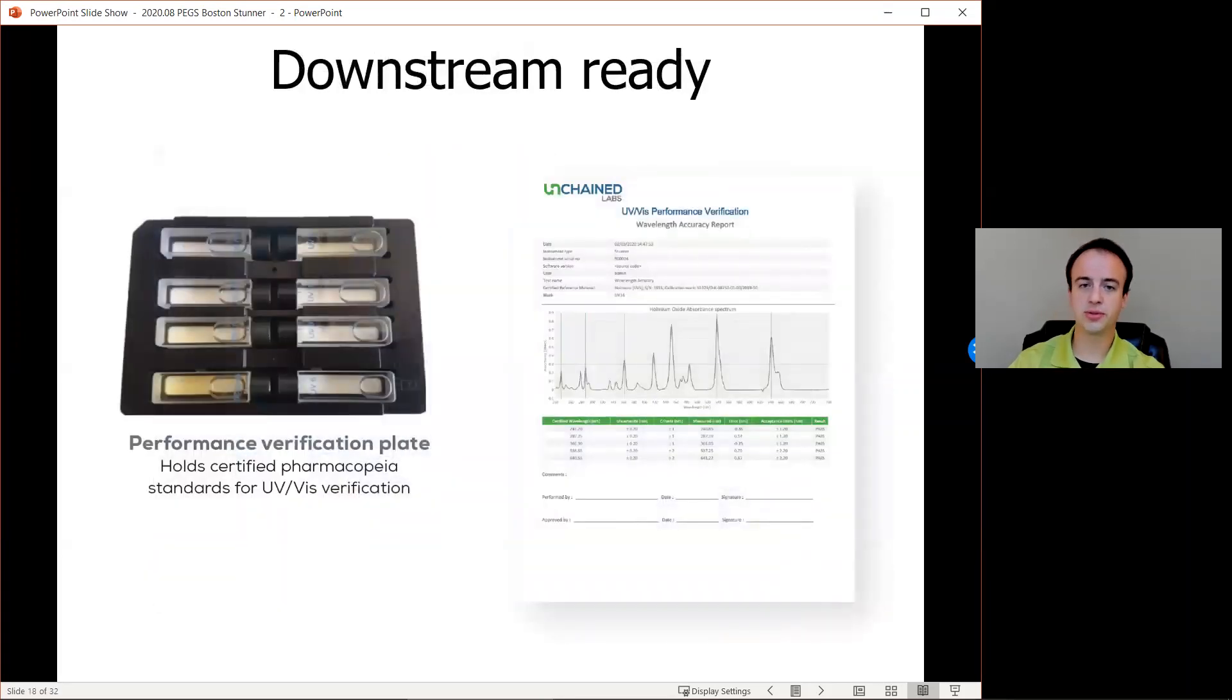To help move Stunner downstream, it comes with the ability to do performance verification. This covers USP, United States Pharmacopeia, Chapter 857, and European Pharmacopeia Chapter 2225 for absorbance accuracy and precision, photometric linearity, wavelength accuracy and resolution, and stray light. So let's take a quick look at examples for those.